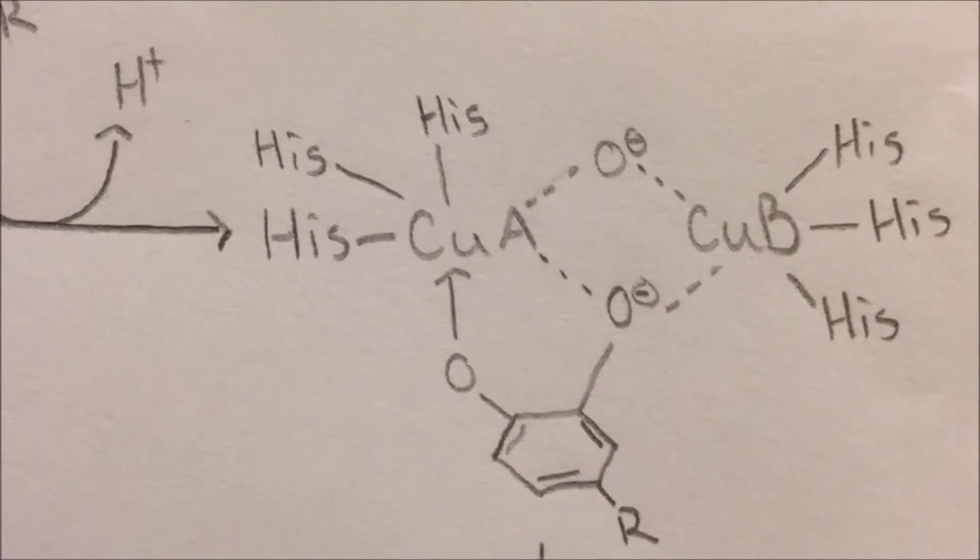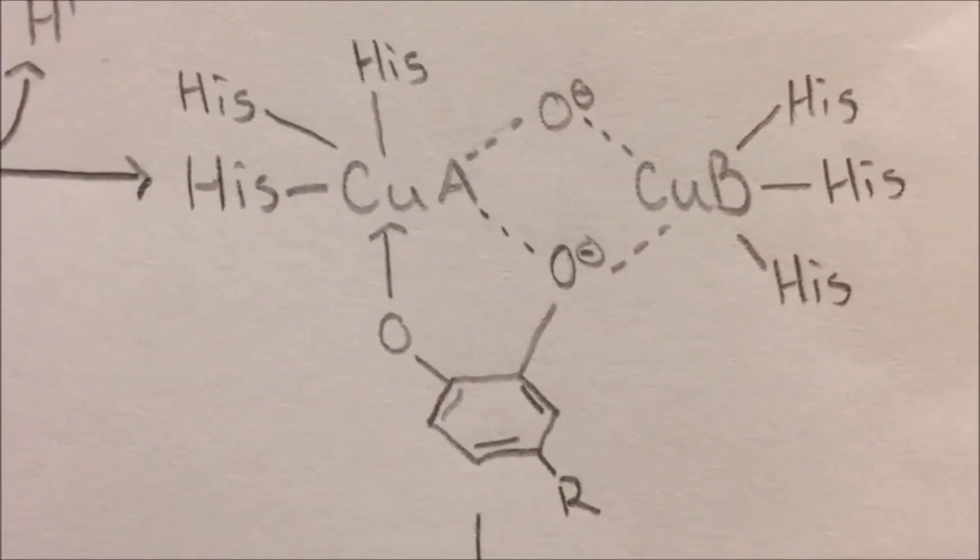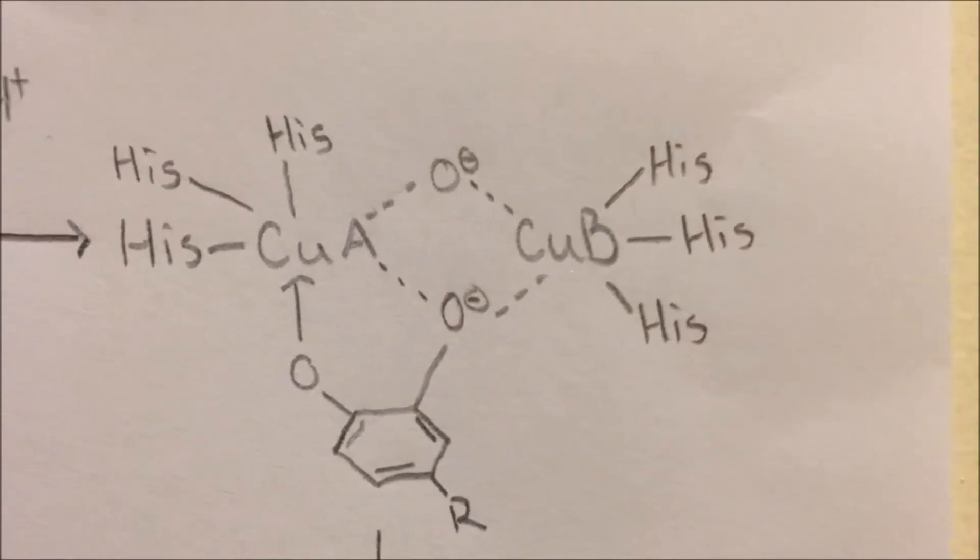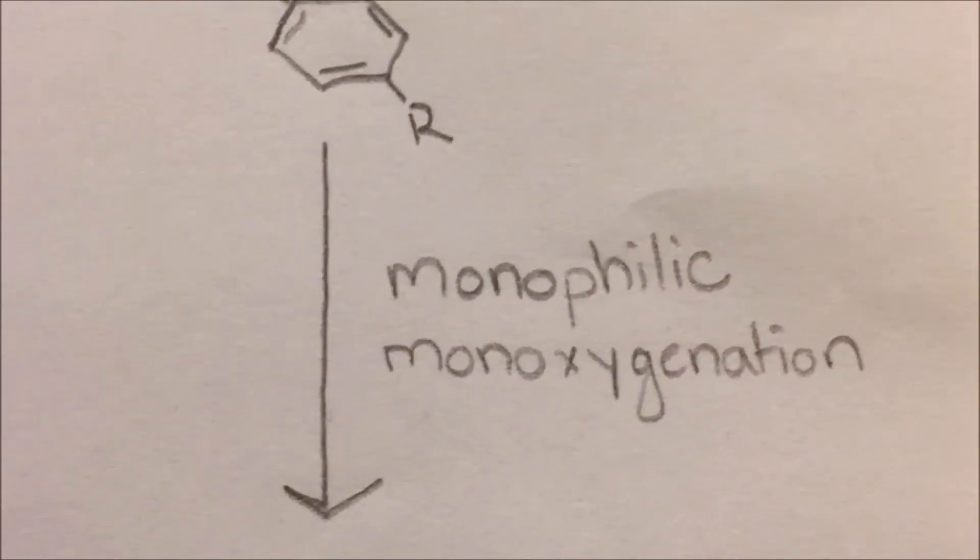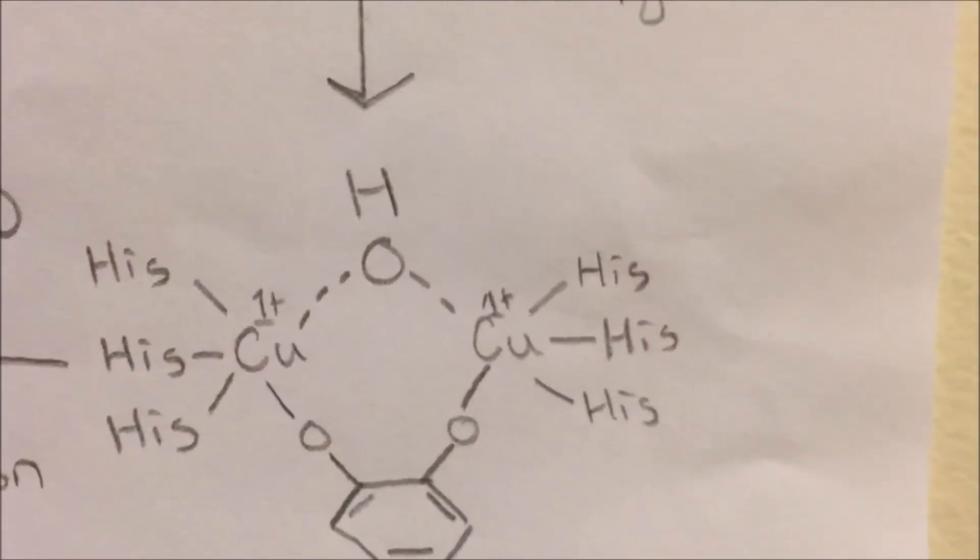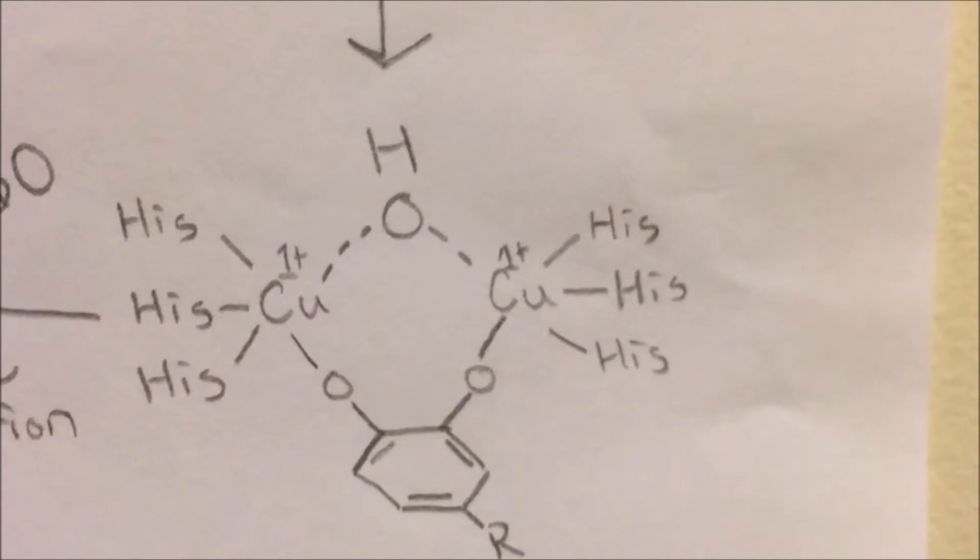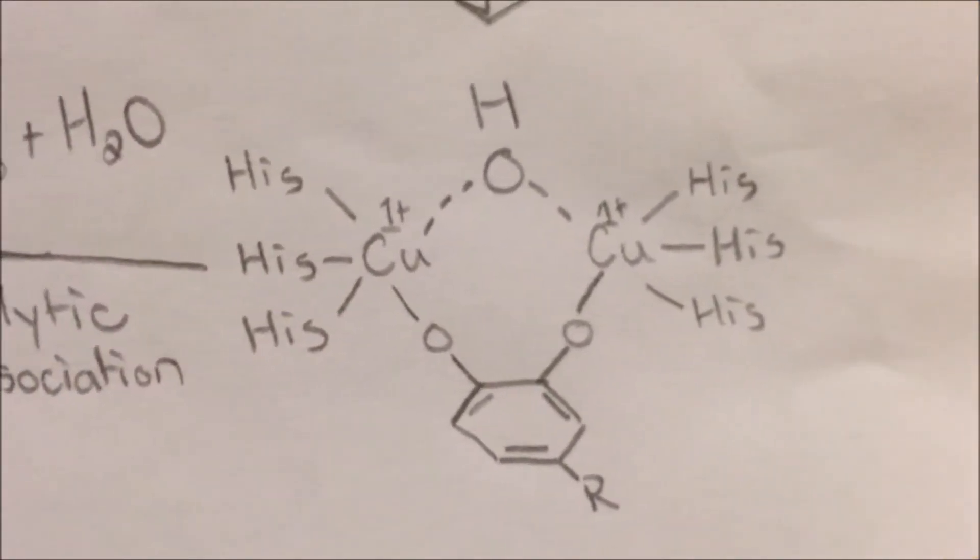L-tyrosine then reacts with the oxygen and copper A to create the transition state. The transition state then goes through monophilic monooxygenation in which the monophenyl becomes bonded to copper A and one of the oxygen molecules from the oxy form of tyrosinase. This begins the formation of what will eventually become L-DOPA.